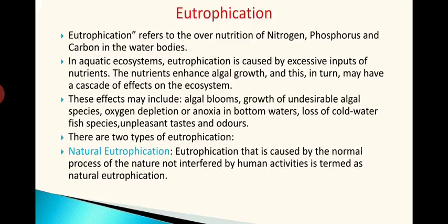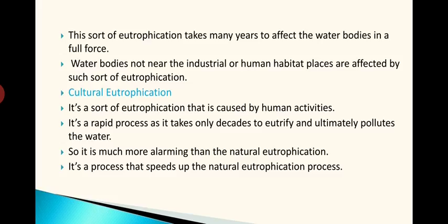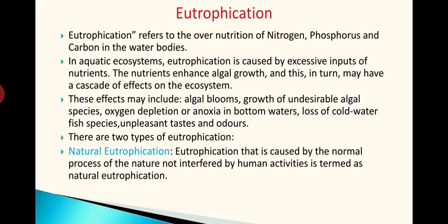There are two types of eutrophication: natural eutrophication and cultural eutrophication. Natural eutrophication is caused by the normal processes of nature with no interference by human activities. It is happening everywhere in water bodies — large water bodies like lakes and rivers — and the eutrophication is happening permanently.